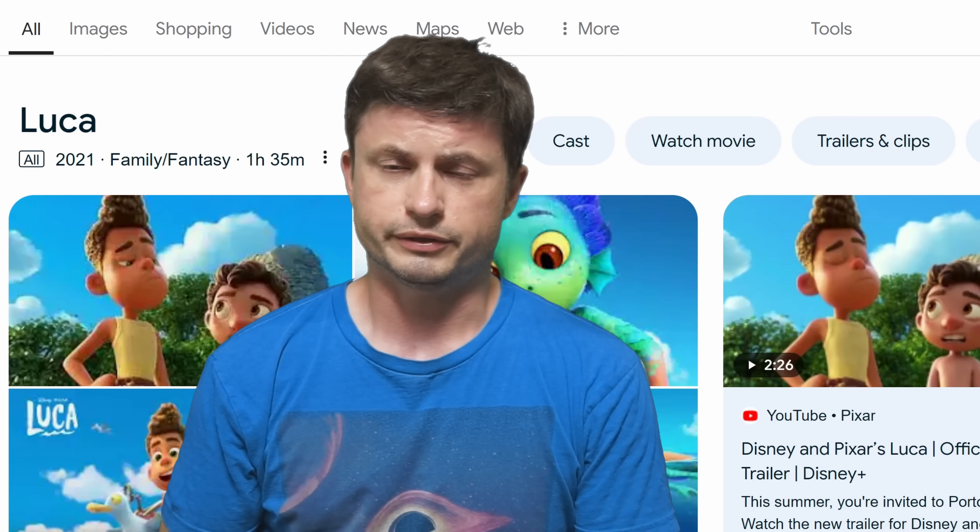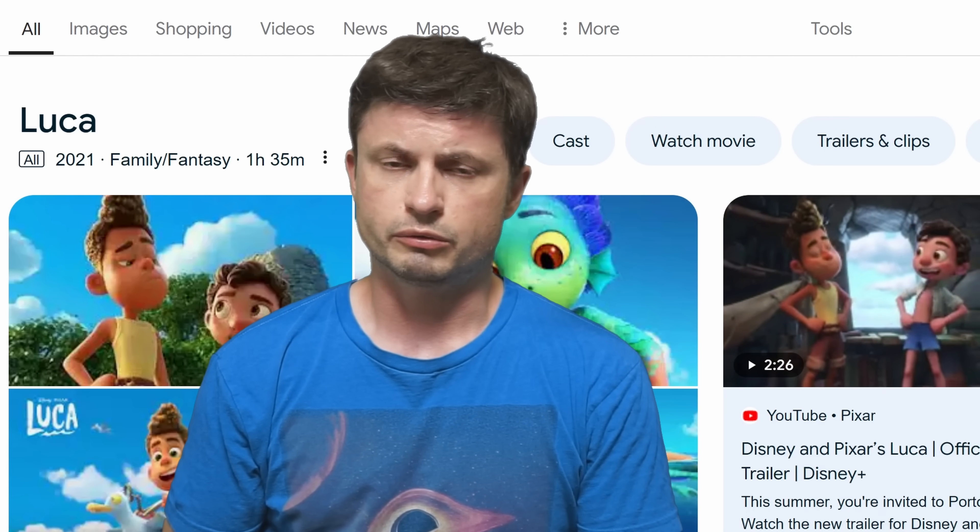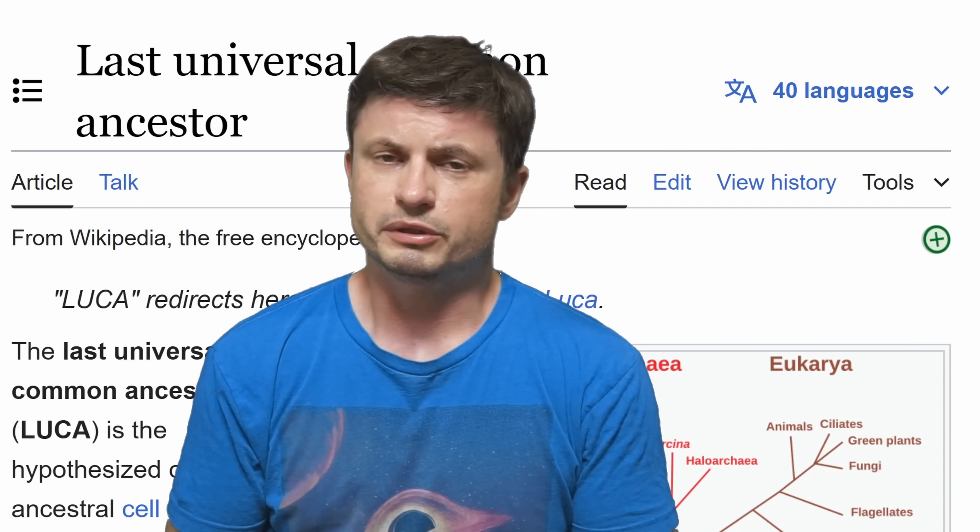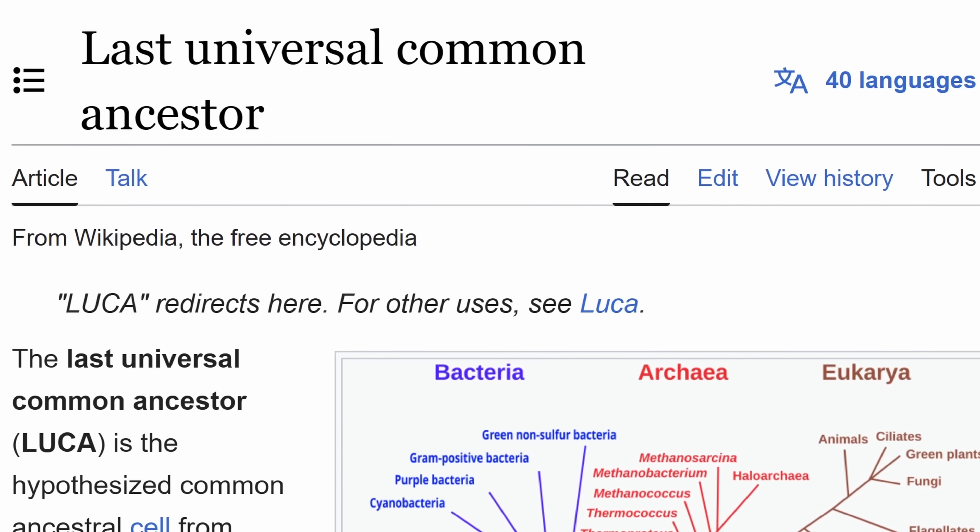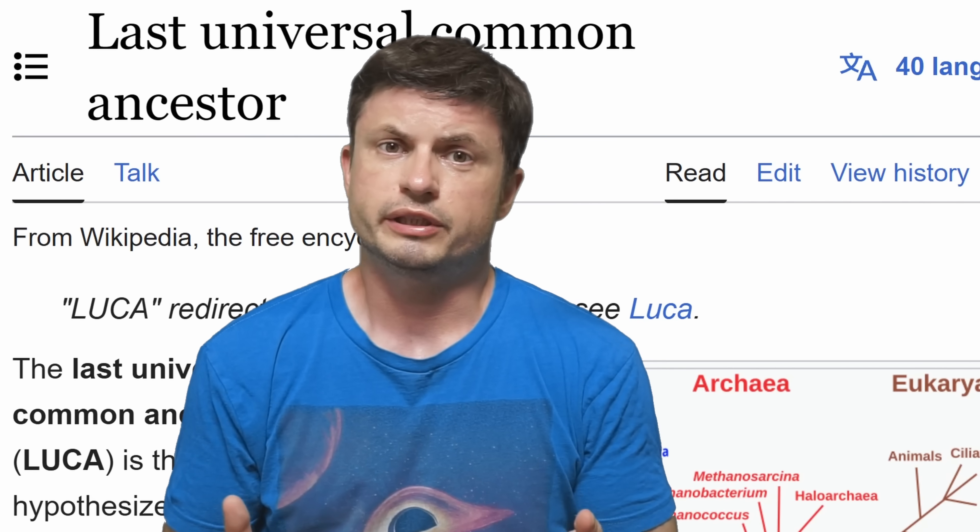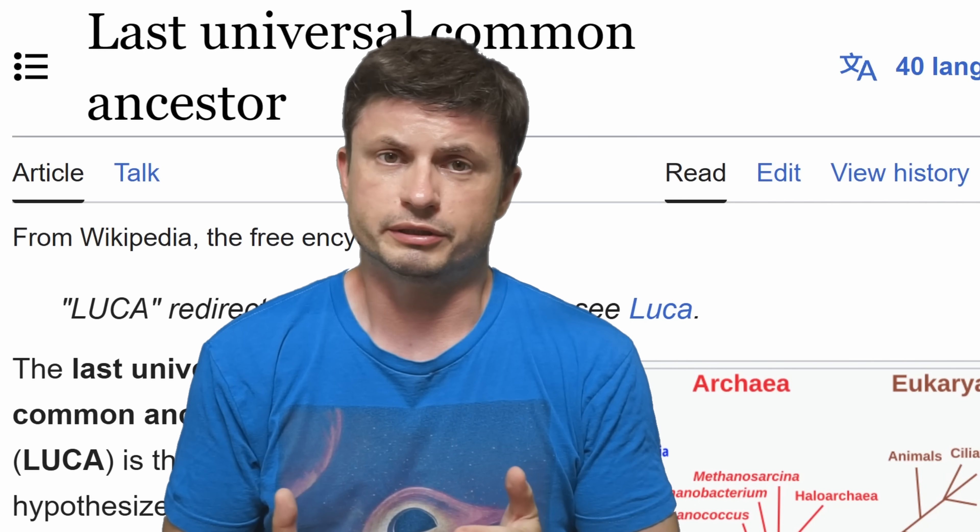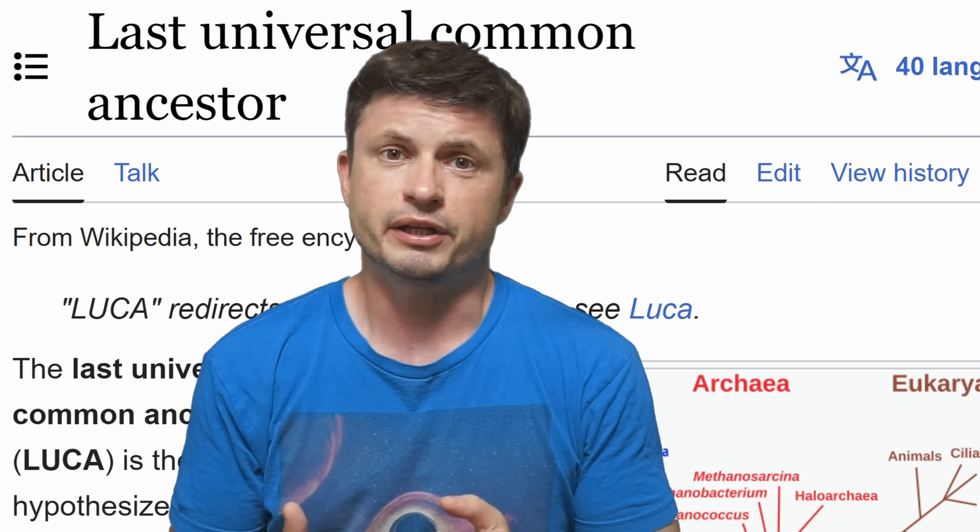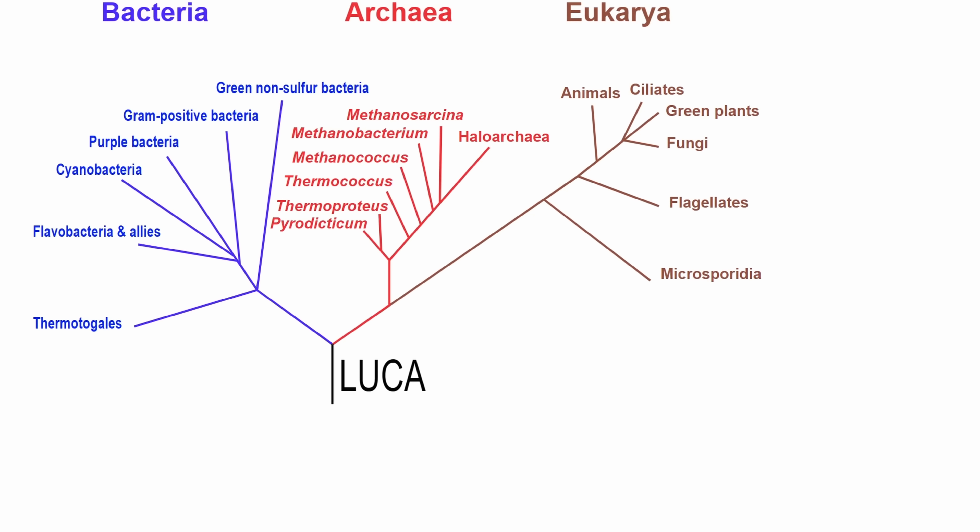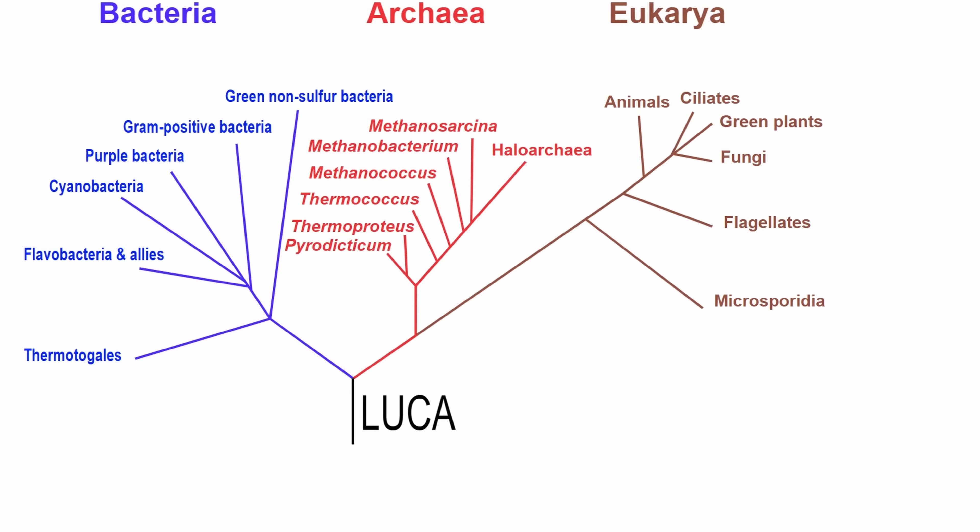So let's discuss LUCA, which if you go on Google takes you to this, but that's not the LUCA we're looking for. In this case we're going to be discussing the last universal common ancestor, which is essentially a concept in evolutionary biology that refers to some kind of an organism that pretty much everything on Earth came from. The organism that most likely began it all.